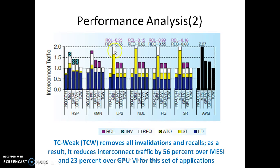However, MESI performs significantly worse compared to write-through protocols in all cases. This is because MESI's write-allocate policy at the L1 cache significantly increases store traffic due to unnecessary repels of write-once data. On average, MESI increases interconnect traffic over the baseline non-coherent GPU by 75% across all applications. Write-through GPU5 introduces unnecessary invalidation and recall traffic, averaging 31% traffic overhead for applications with only intra-work-group communication. TC weak removes all invalidations and recalls, reducing interconnect traffic by 56% over MESI and 23% over GPU5.